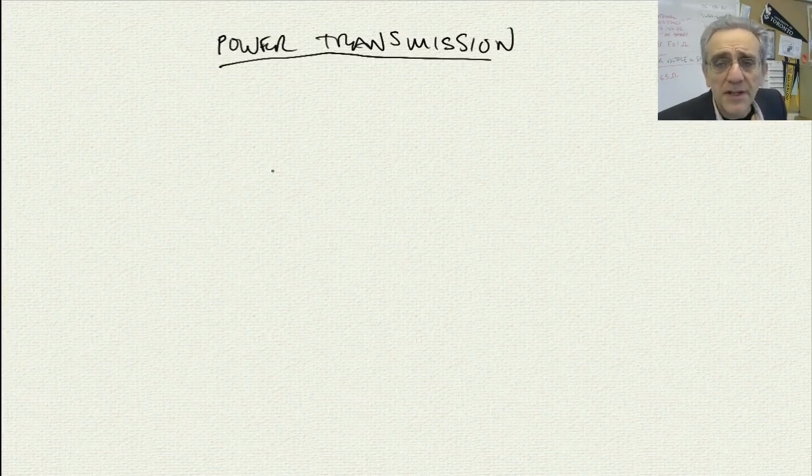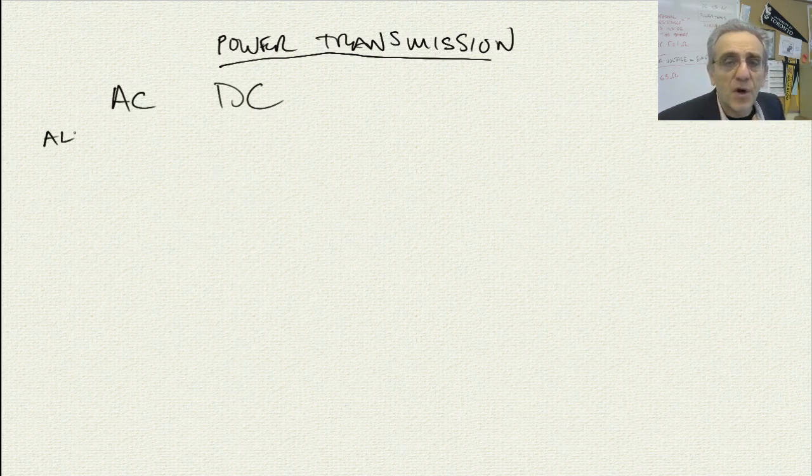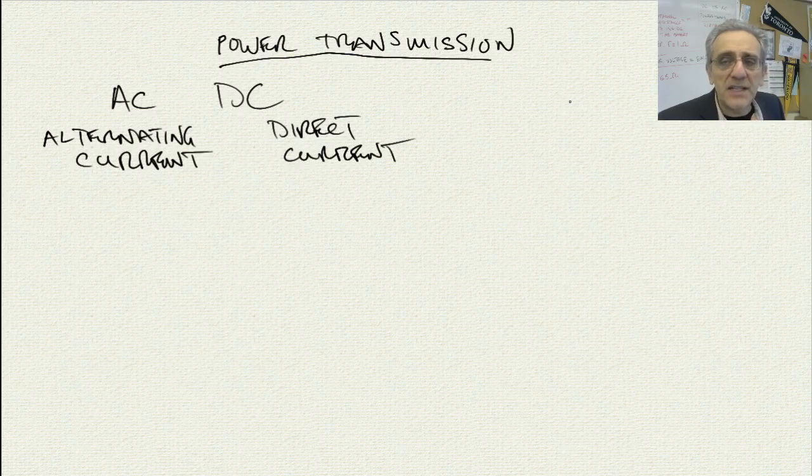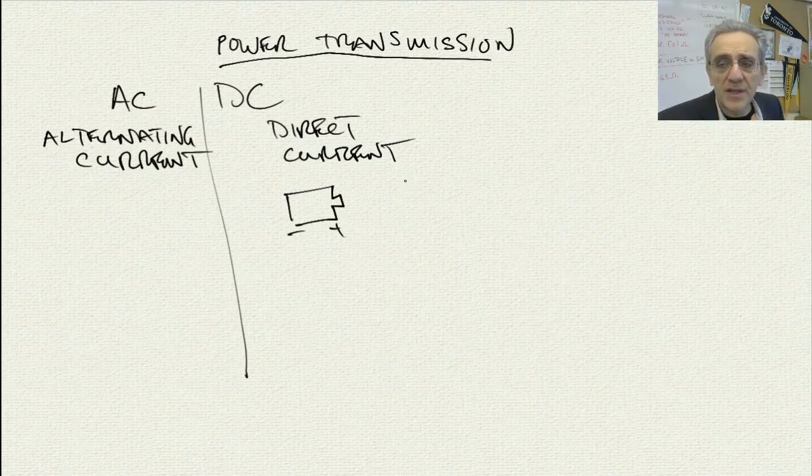In order to understand this concept, first we have to understand the difference between AC and DC current. AC stands for alternating current, and DC stands for direct current. DC is the type of current that you get out of a battery. It is in one direction, it's constant in one direction.